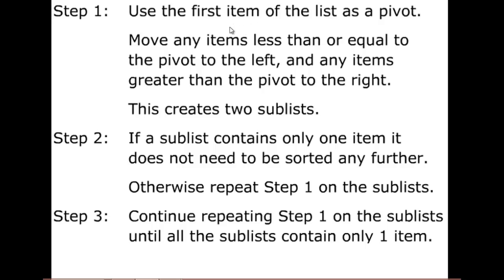We then look at all of the items on the list, and we place them in the order from left to right that we find them, either to the left of the pivot if they are less than or equal to it, or to the right of it if they're greater than. We then end up with the pivot in between two sub-lists.